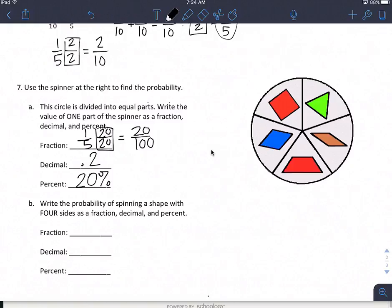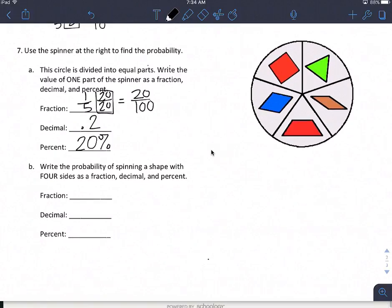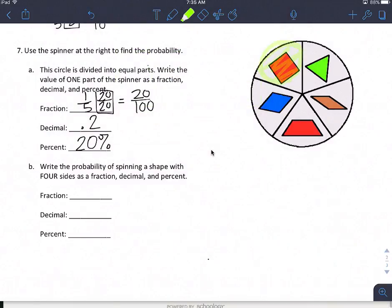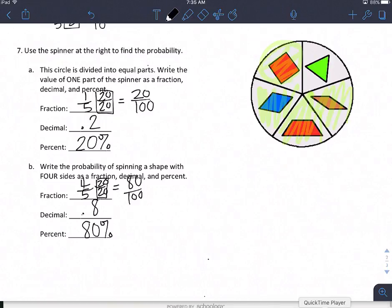Now the second one is write the probability of spinning a shape with 4 sides as a fraction, decimal, and percent. So I'm going to look and see which shapes have 4 sides. This one, this one, this one, and this one. How many did I shade in? 4 out of 5. Again, I'm going to multiply by 20, and I get 80 over 100. 0.8, sorry about the bell, and 80%. All right, there we go. That is our unit for review.